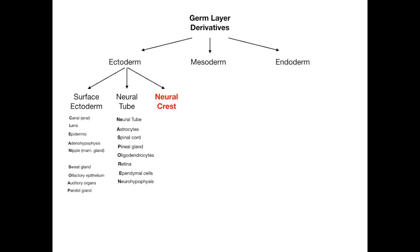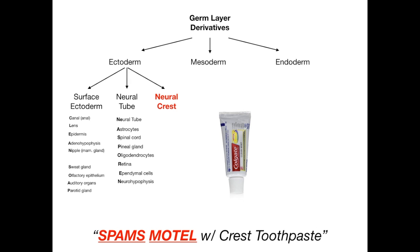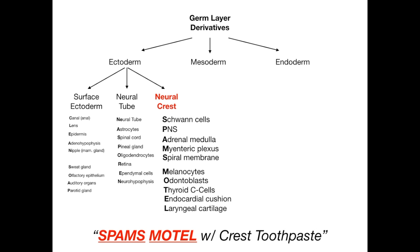For the neural crest, focus on the word 'crest,' which makes me think of Crest toothpaste. Anytime you go to a motel, they put those little free miniature toothpastes in the bathroom. So think: motels get spammed with Crest toothpaste. 'SPAMS' and 'MOTEL' (S-P-A-M-S-M-O-T-E-L) are the letters that tell us what comes from the neural crest. SPAMS: Schwann cells, Peripheral nervous system, Adrenal medulla, Myenteric (Auerbach) plexus, and Spiral membrane. MOTEL: Melanocytes, Odontoblasts, Thyroid C cells (parafollicular), Endocardial cushion, and Laryngeal cartilage.